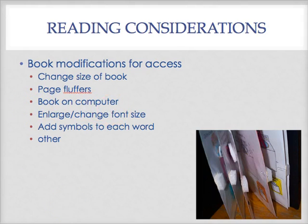Putting books on a computer is a huge help — many books are already available for download. Having the visual of the book and having it read aloud via the computer makes it much more accessible. That's one of the things Georgia Tools for Life works on. Enlarging and changing the font size, making it bold, helps students with visual impairments. Adding symbols to each word using a program like Writing with Symbols — which automatically places a symbol above each typed word — can be very helpful for students with lower cognitive functioning.